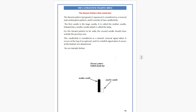The first candle is the larger candle, called the mother candle, followed by a smaller candle called the baby candle. For the Harami pattern to be valid, the second candle should close inside the previous one. The candlestick is considered a reversal signal when it occurs at the top of an uptrend and a bullish signal when it occurs at the bottom of a downtrend.